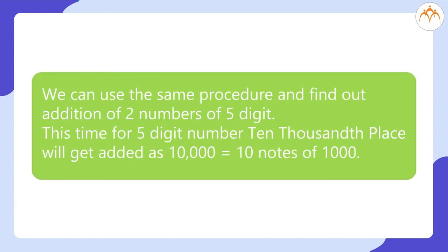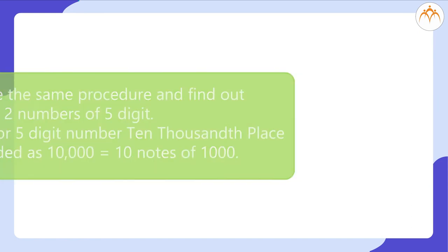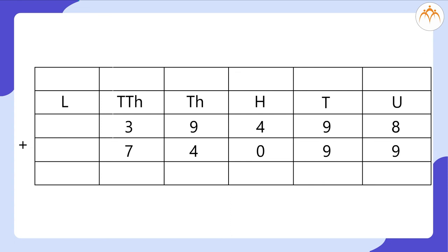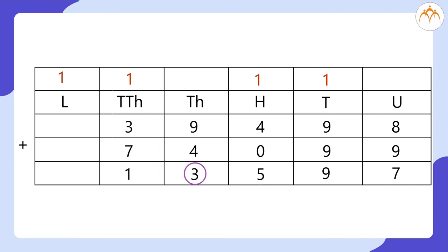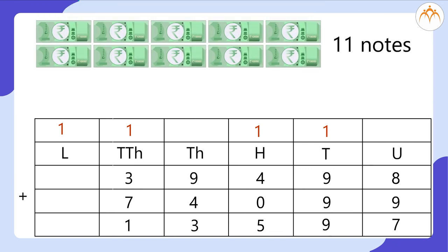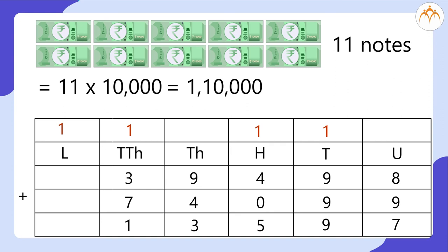We can use the same procedure to find the addition of two 5-digit numbers. For a 5-digit number, the 10,000th place is added, as 10,000 equals 10 notes of 1,000. Let's try the addition of 39,498 and 74,099. As we add digits from the units place, after adding the digits at the 100s place we get no carry forward to the 1,000s place. However, after adding the digits at the 10,000s place along with carryover, we get 11 notes of 10,000, which equals 1,10,000 — meaning we needed to add a lakhs place to indicate this number.